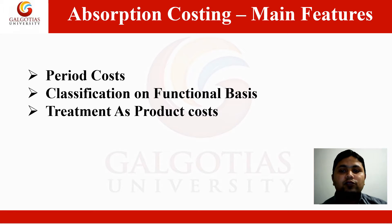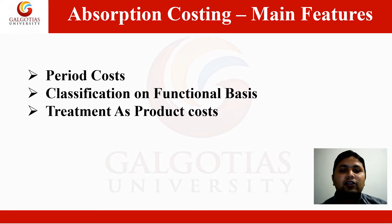Now the main features of Absorption Costing. Number 1 — Period Costs: all Administration, Selling and Distribution Overheads are treated as Period Costs and are written off against profits in the period in which they arise. Number 2 — Classification on Functional Basis: all costs are classified as Production Costs, Administration Costs, Selling Costs, and Distribution Costs. Number 3 — Treatment as Product Costs: all Variable Manufacturing Costs and Fixed Production Overheads are treated as Product Costs and charged to operations, processes, or products.